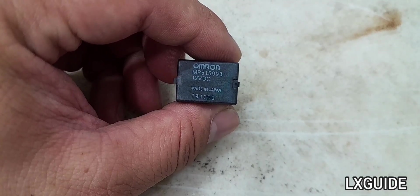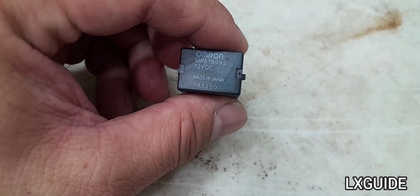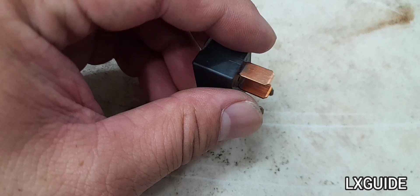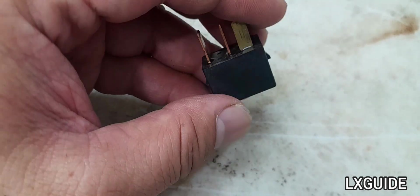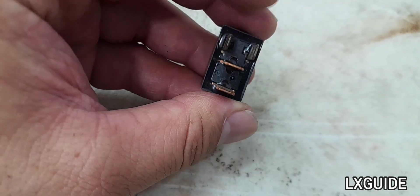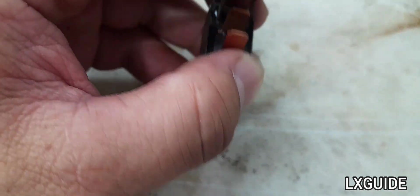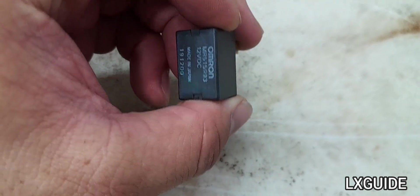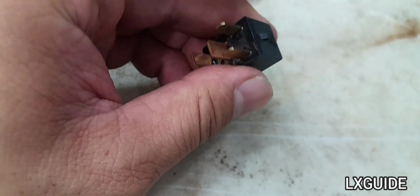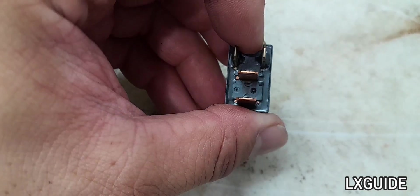As mentioned earlier, pin number 86 and 85 are used for power and ground to energize the coil. If you look at this relay over here there is no marking or label so you can't tell which pin is which. I'm going to show you guys how to find pin number 86 and 85.